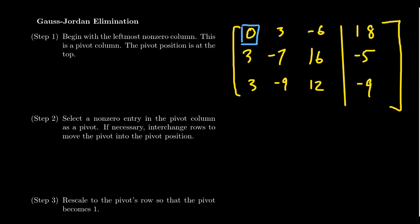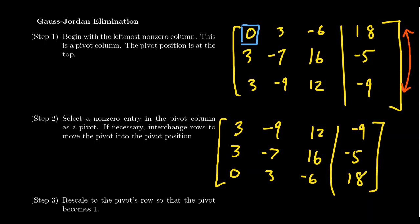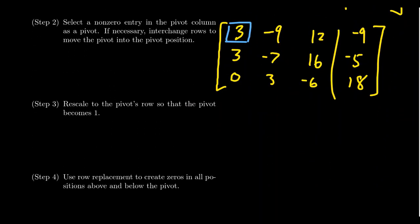For this example, I'm going to interchange the first and third rows. So interchanging row one and row three — the third row now becomes the first row: 3, -9, 12, -9. The second row is unchanged: 3, -7, 16, -5. And the first row is now at the bottom: 0, 3, -6, 18. Note that the pivot position is still the (1,1) top-left position — the pivot position didn't move, but everything moves around it.